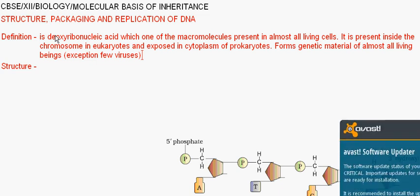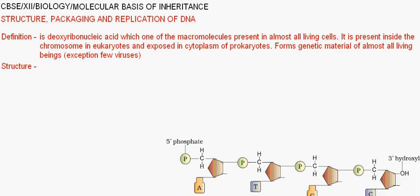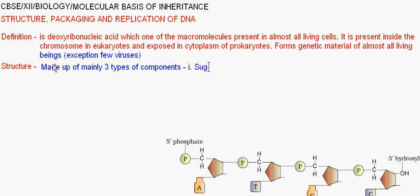Now, coming to the structure — DNA is mainly made up of three types of components. Number one: Sugar. Number two: Nitrogenous bases. And number three: Phosphate Group.